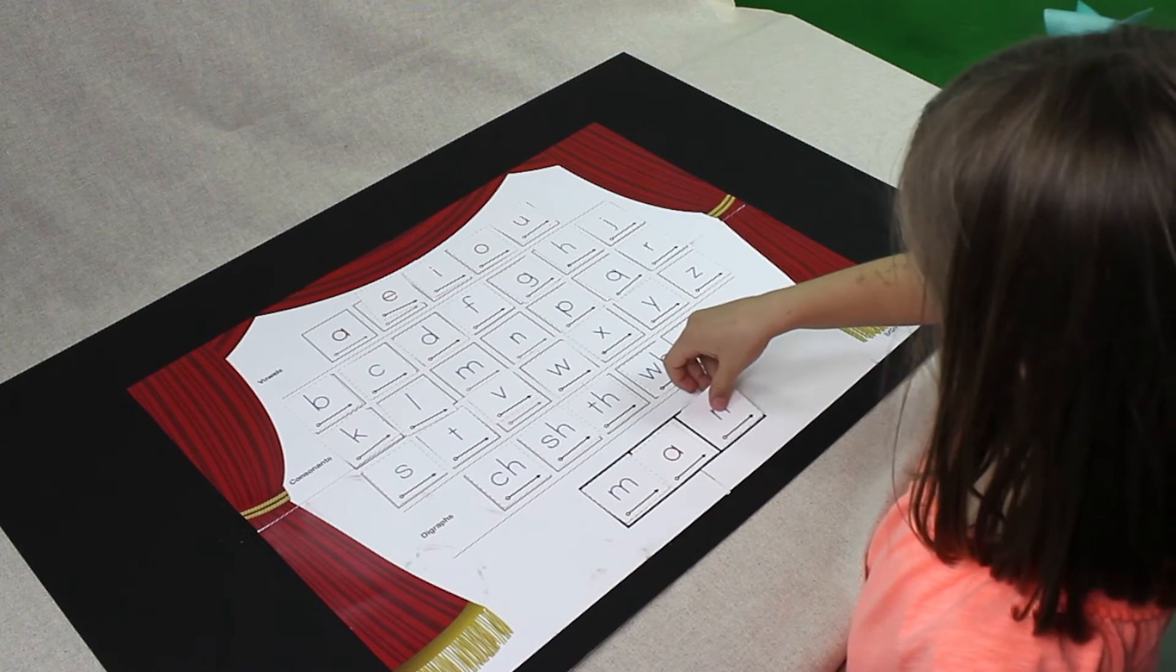Now put the D card back in its place. Swap it for the N card. Say the sound on each card. Get ready.